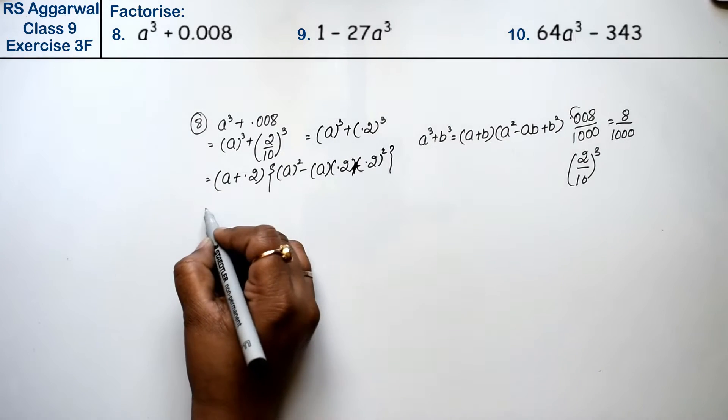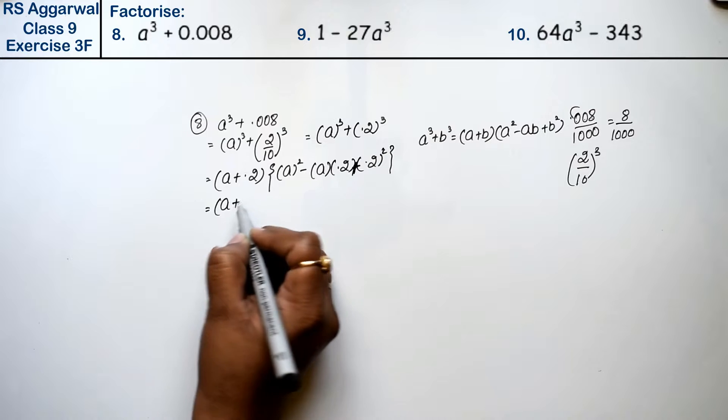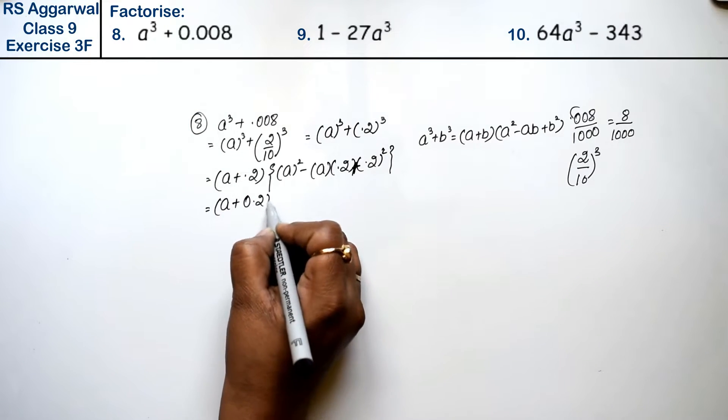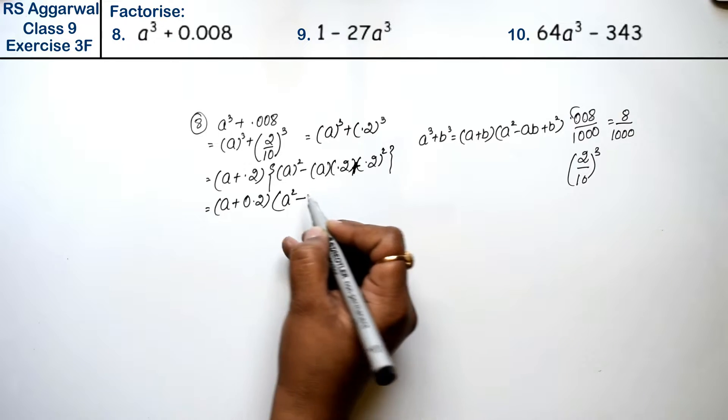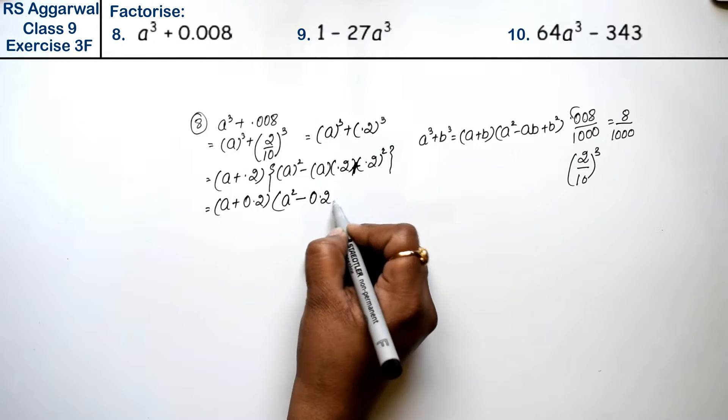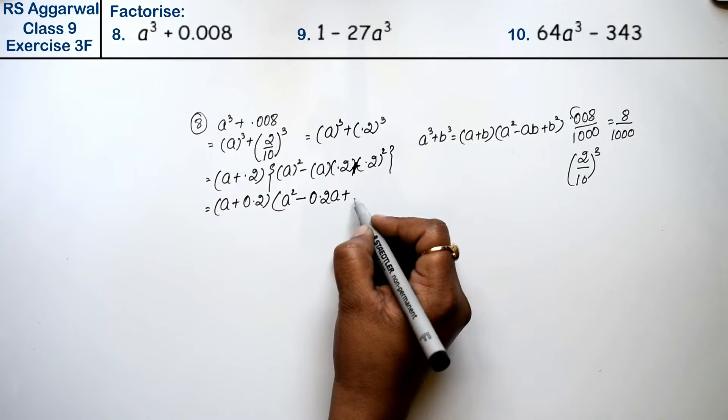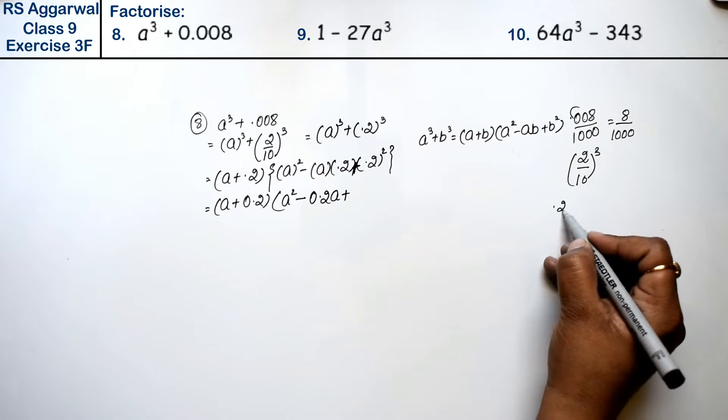Here I am going to write (a plus 0.2)(a² minus 0.2a plus 0.2²).